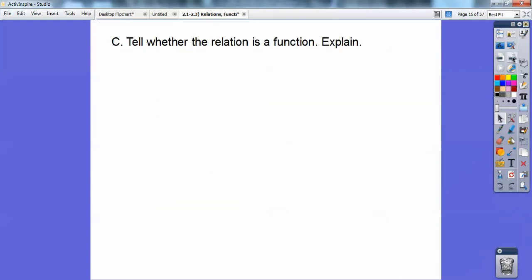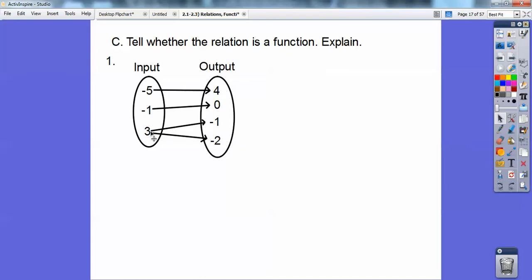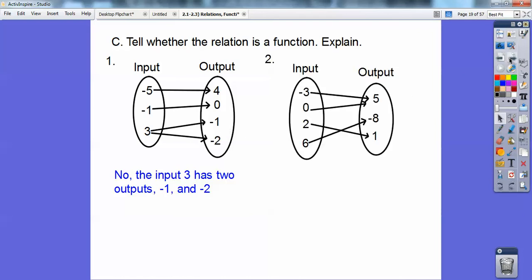All right, this guy right here, tell whether the relation is a function, then explain. So can you see that this input right here, 3 gives me negative 1 and 3 gives me negative 2? This is a relation, it's just not a function, you guys, because 3 has two outputs. 3 goes to negative 1 and negative 2 right there. All right, what about this one right here? Now, I have two numbers going to the same output, but I don't have any inputs going to two different outputs. So as long as the inputs are not repeating, then it is a function, and this one is a function right there.